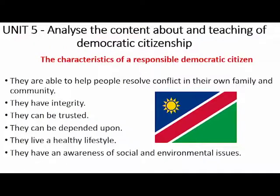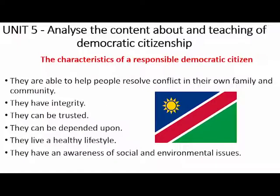Now we look at Unit 5, which has to do with the content and teaching about democratic citizenship. There are certain characteristics of being a responsible democratic citizen. A democratic and responsible citizen is able to help people resolve conflict in their own family and community — they don't stir for violence, they try to keep the peace. They have integrity, can be trusted, are dependable, and live a healthy lifestyle. They also have keen awareness of social and environmental issues within their communities and country.